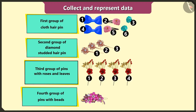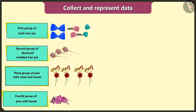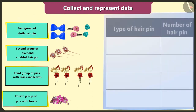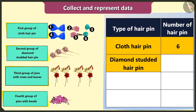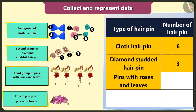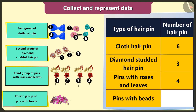I will count the hairpins in each group. I have six hairpins made of cloth, three diamond studded hairpins, four hairpins with roses and leaves, and one big hairpin with beads. Now I will represent all the data by making a table. Wow, I am having fun.